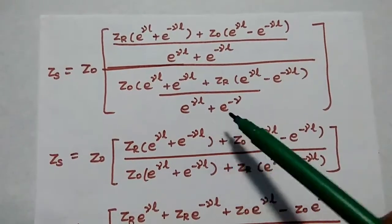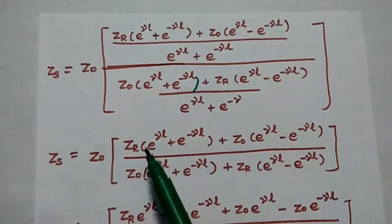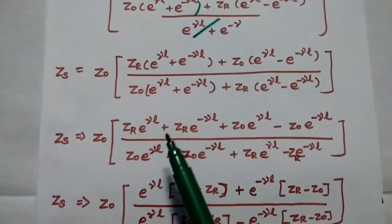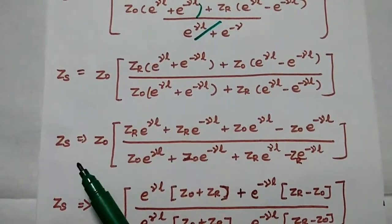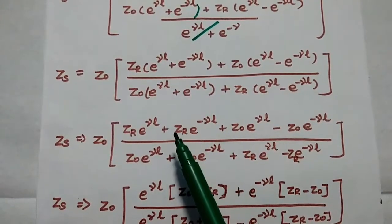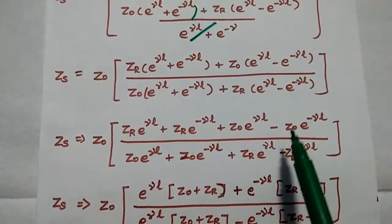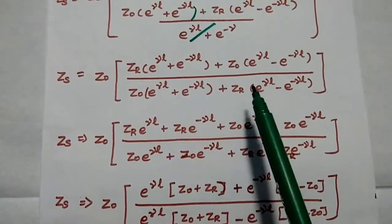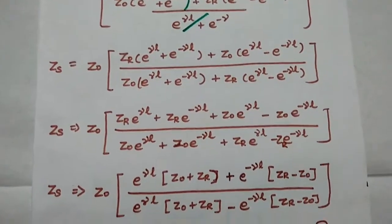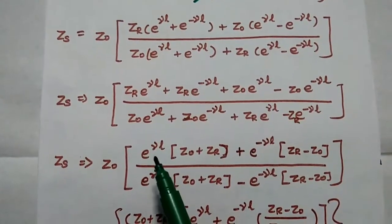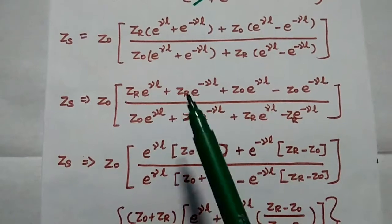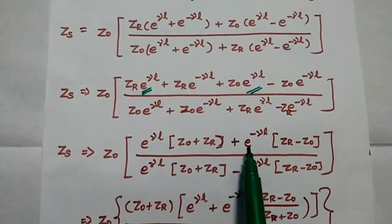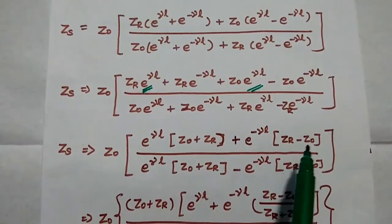Similarly, in the denominator we multiply Z0 by that same term. After multiplying all terms inside, we get Zs equal to Z0 times the quantity Zr·e^(γL) plus Zr·e^(-γL) plus Z0·e^(γL) minus Z0·e^(-γL), divided by the corresponding denominator. We then take e^(γL) and e^(-γL) as common terms. Taking e^(γL) as common gives Z0 plus Zr; taking e^(-γL) as common gives Zr minus Z0.